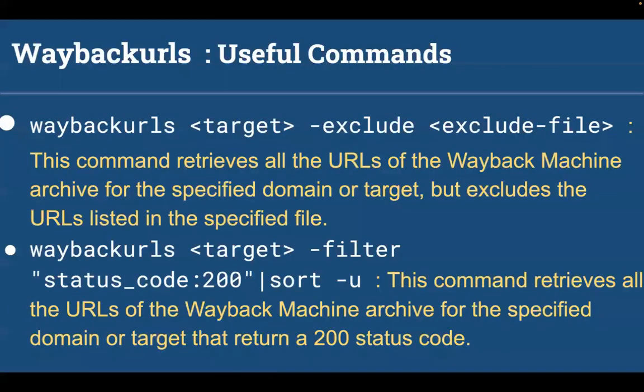Another command: if you want to exclude some URLs listed in a specified file, you can use this command — Wayback URLs, give the target name, then the flag hyphen exclude and your exclude file. This command retrieves all the URLs of the Wayback Machine archives for the specified domain or target, but excludes the URLs listed in the specified file.